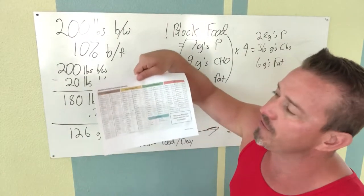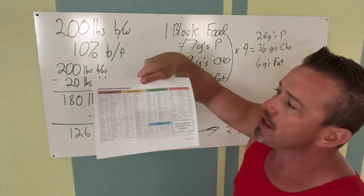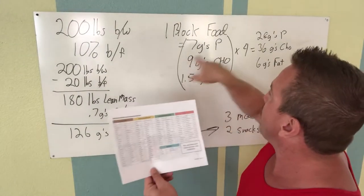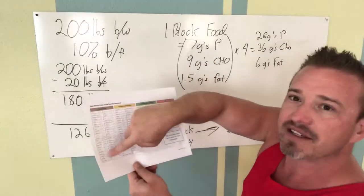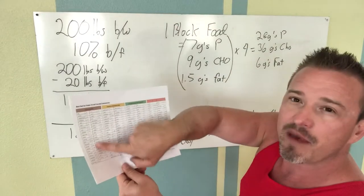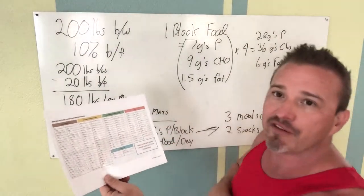We have our chart for our proteins and our favorable carbohydrates here on the printout. It's going to be four blocks times the protein. These serving sizes are going to give you the amount of protein, the amount of carbohydrates, and then the amount of fat that you need to have per meal.